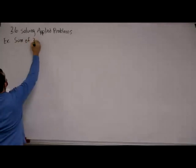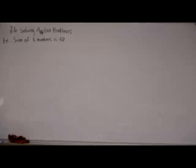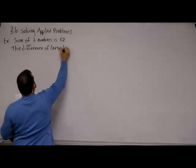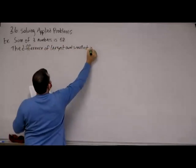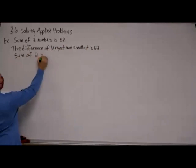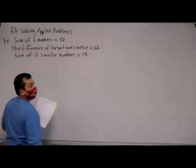The first problem starts out: the sum of three numbers is 58. The second equation gives the difference of the largest and smallest. And the sum of the two smaller numbers is 13. So I've got my three equations to work with.